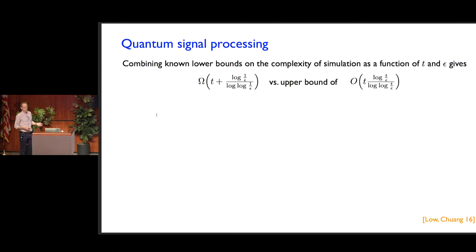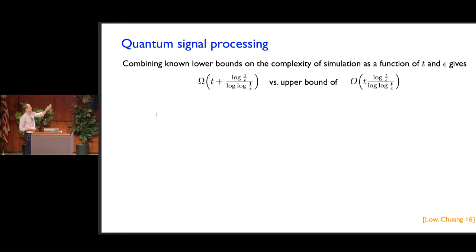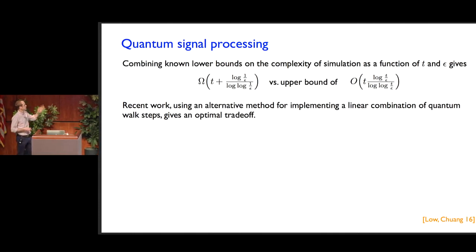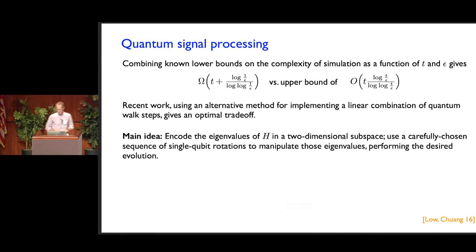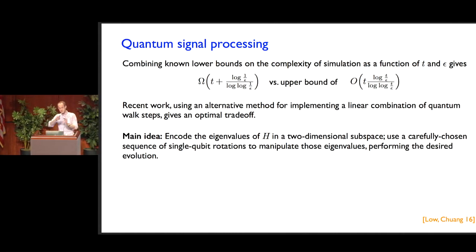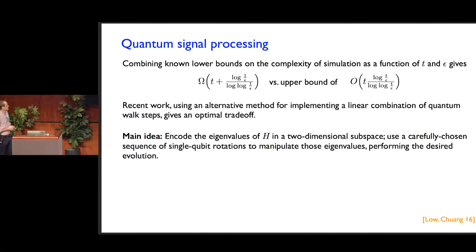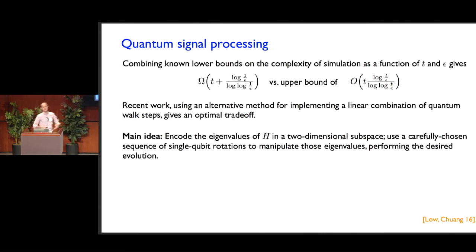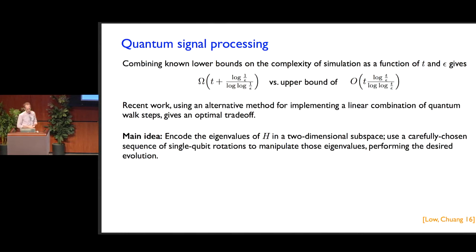There are also algorithms based on quantum signal processing that have recently been developed, which help understand trade-offs in complexity as a function of evolution time and error. The quantum signal processing approach gave an algorithm that meets the previously known lower bound. These algorithms somehow effectively encode spectral information about the Hamiltonian into some two-dimensional subspace where you can manipulate it in a nice way. For the purposes of this talk, the main thing to know is that this is another Hamiltonian simulation algorithm we could consider — we can throw it into the mix and figure out whether it's actually worth using on early devices.